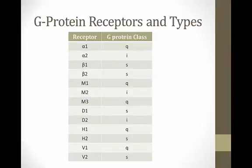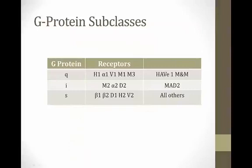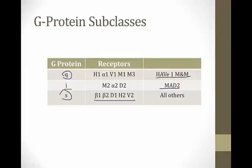The receptor-G protein pairings: alpha-1, alpha-2, beta-1, and beta-2 are sympathetic receptors; M1, M2, and M3 are muscarinic subtypes. GQ proteins are found in H1, alpha-1, V1, M1, and M3 receptors — remembered by 'HAVMM' or 'have 1 M and M.' GI proteins are found in M2, alpha-2, and D2 — remembered by 'MAD2.' GS proteins are found in all remaining receptor types including beta-1, beta-2, D1, H2, and V2.